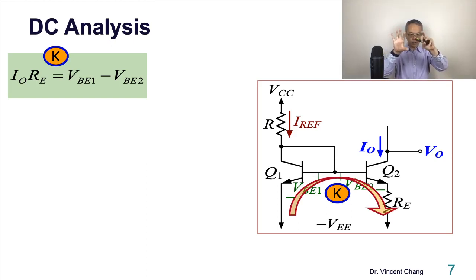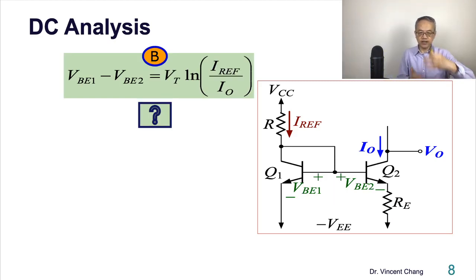The difference between two VBE is the drop across RE. And then the VBE, the difference between VBE, if you're calling transistor's characteristic equals what? VT natural log, reference current divided by IO.